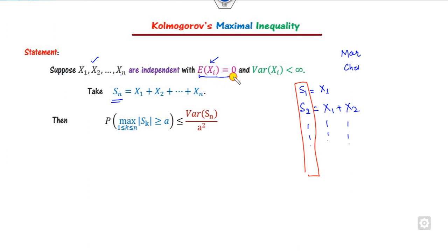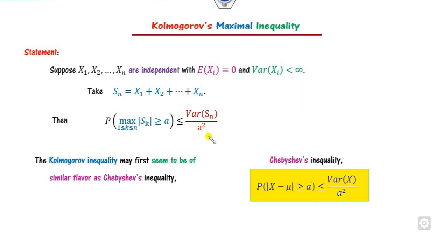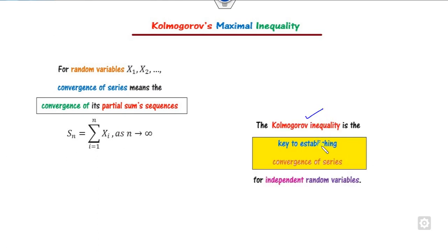In Markov and Chebyshev inequalities, such a restriction of zero expected value is not imposed — they work for any expected value. But the Kolmogorov maximal inequality requires expected value of each X_i to be zero. Although it looks similar to the Chebyshev inequality, the Kolmogorov inequality is stronger because it works on partial sums of a sequence. This makes it the key tool to establish the convergence of series for independent random variables, while Markov and Chebyshev work only on random variables.